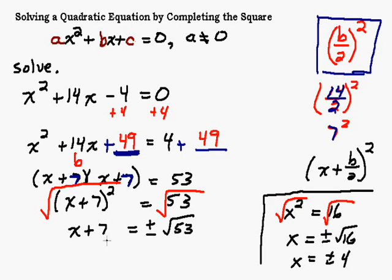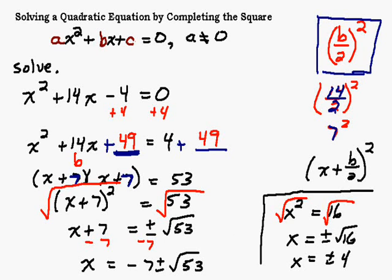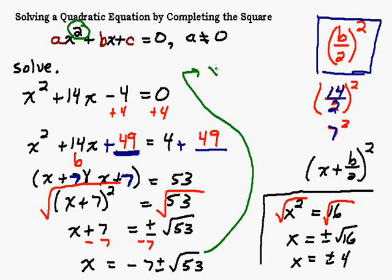We're solving, so we're trying to get x by itself. The last thing we need to do is subtract 7 from both sides, and we can't combine those — they're not like terms. So we end up with x equals negative 7 plus or minus the square root of 53. Whenever you're solving a quadratic equation, you're going to come up with two possible answers. Because of the plus or minus, that's where you get your two answers: x equals negative 7 plus the square root of 53, or x equals negative 7 minus the square root of 53.